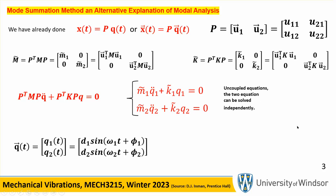We spent about eight weeks on single-degree-of-freedom systems and found that if you have an equation like that, you can actually solve it. The solution is an amplitude times sine of frequency — the phase angle and amplitude depend on the initial conditions. When a problem is given with x at time zero and x-dot at time zero specified, that gives four equations for four unknowns.